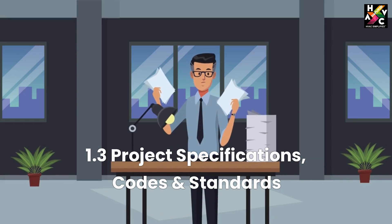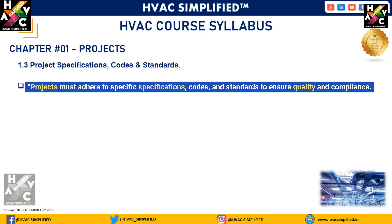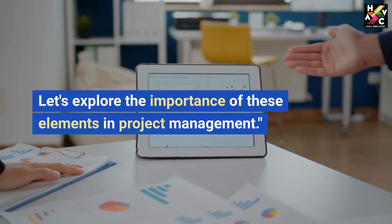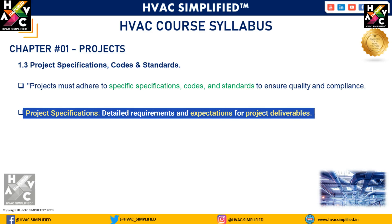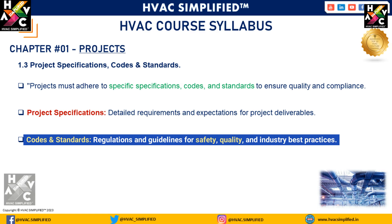Project Specifications, Codes and Standards. Projects must adhere to specific specifications, codes, and standards to ensure quality and compliance. Let's explore the importance of these elements in project management. Project Specifications: detailed requirements and expectations for project deliverables. Codes and Standards: regulations and guidelines for safety, quality, and industry best practices.